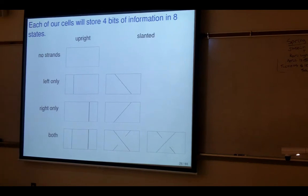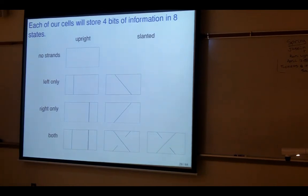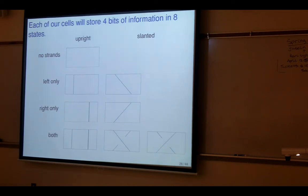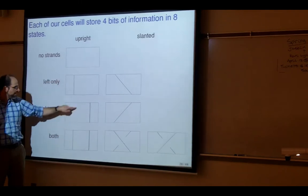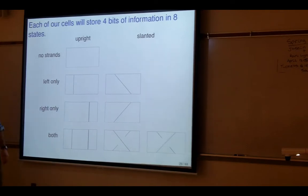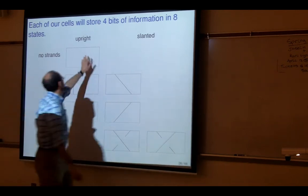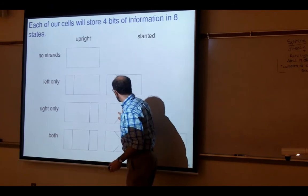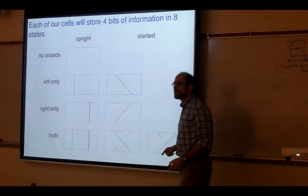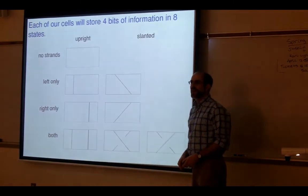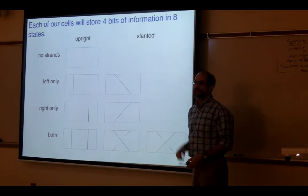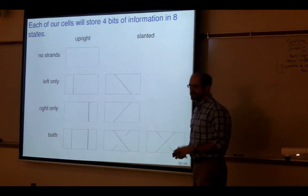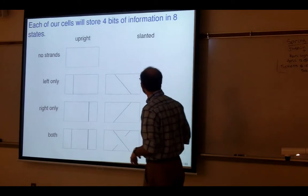In my model, each cell stores four bits of information. The first two bits say: is there a left strand or not, and is there a right strand or not. The third bit says: are the strands straight or slanted? If there are no strands that bit is ignored. The fourth bit, needed only when two strands are slanted, indicates the direction of the crossing — left over right or right over left. So there are eight different types of cells total, with four bits of information, some of which are ignored in certain situations.